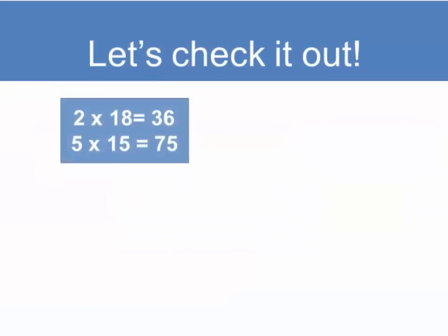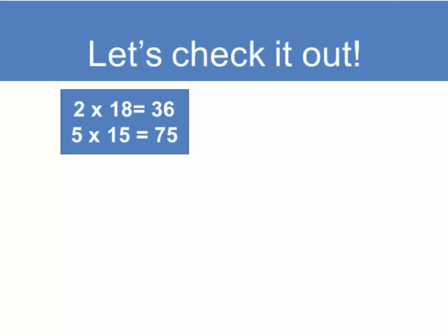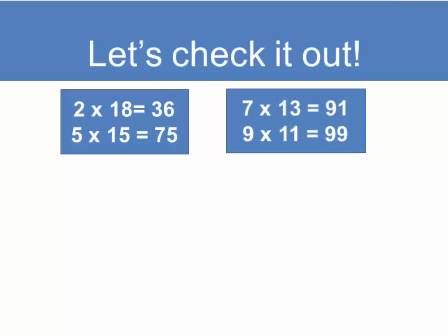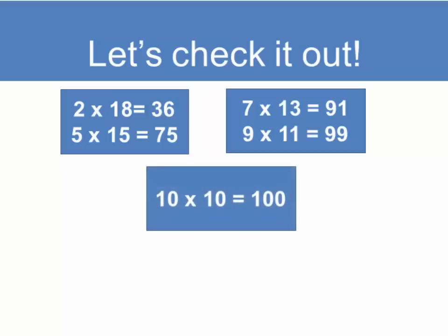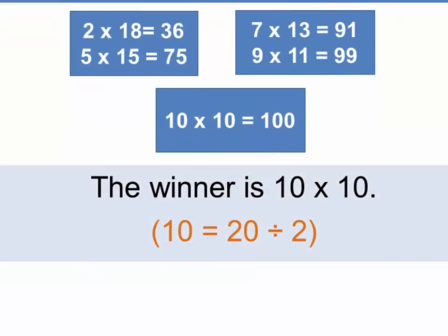Well, let's check out the math here. 2 times 18 is 36. Notice that the difference between 2 and 18 is 16, whereas 5 times 15 is 75. Now the difference between those two numbers is only 10 and their product is much larger. Let's keep following this out. 7 times 13 is 91, and 9 times 11 is 99. And the question is, can we get any bigger than 99? And yes we can. 10 times 10 equals 100. So that's the winner, 10 times 10, and notice that 10 is simply 20 divided by 2.